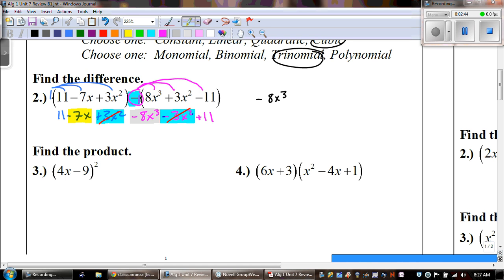So, then we have our negative 7x, and that's all by itself. And then the last one would be 11 plus 11, and 11 plus 11 is 22. So, our final answer is negative 8x cubed minus 7x plus 22.